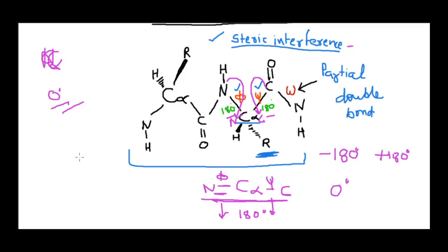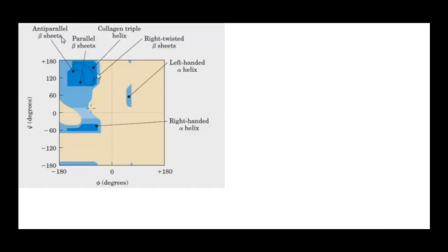What Ramachandran did was show the allowed bond angles of protein secondary structures graphically in a plot. At that time, bioinformatics and computational tools did not exist, so he showed graphically which angles are allowed. This is the Ramachandran plot, where he plotted phi versus psi and showed all the allowed bond angles from minus 180 to plus 180 on both axes.